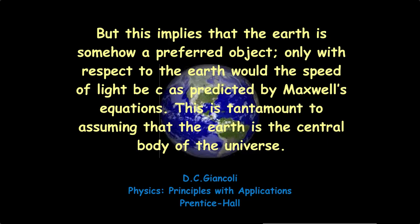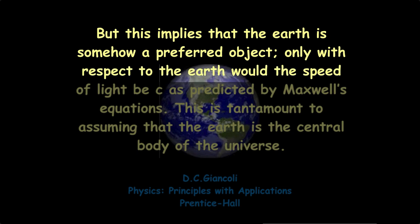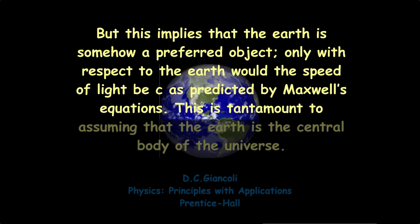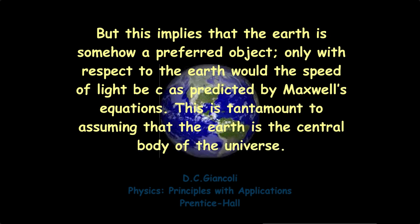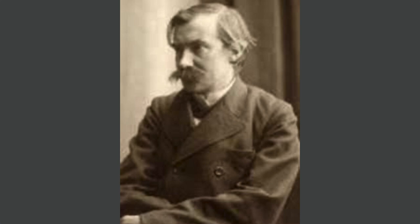As G.L. and Colley noted, this implies that the Earth is somehow a preferred object. Only with respect to the Earth would the speed of light be c as predicted by Maxwell's equations. This is tantamount to assuming that the Earth is the central body of the universe — and that was such an unwelcome prospect for the scientific community that they searched for ways to explain it away, as they had done for all the previous experiments which had shown the Earth to be stationary.